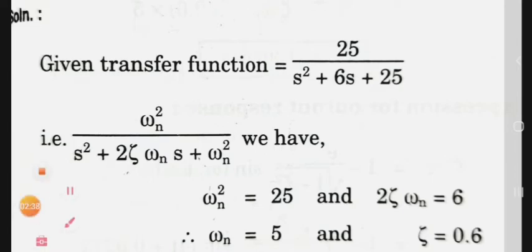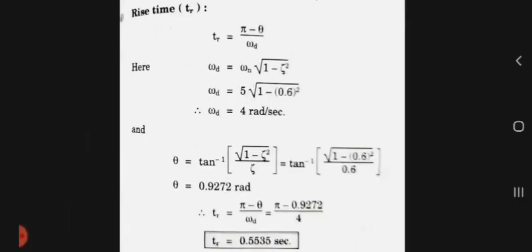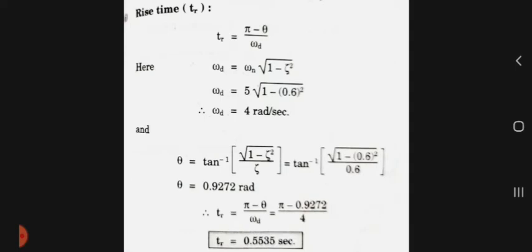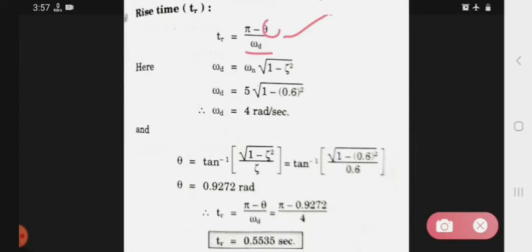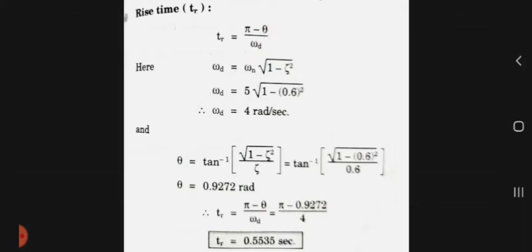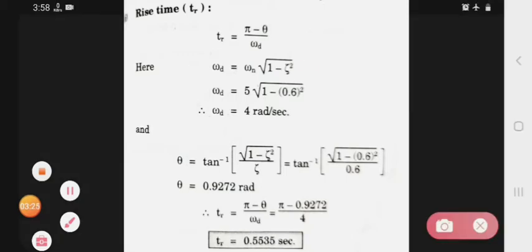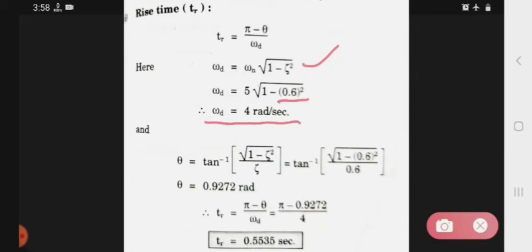Then next we have to find out the rise time. The formula you know is Tr = (π - θ)/ωd. ωd is equal to ωn√(1 - ζ²). Already we have found the value that is 0.6. If we put it and solve, then ωd equals to 4 radian per second.